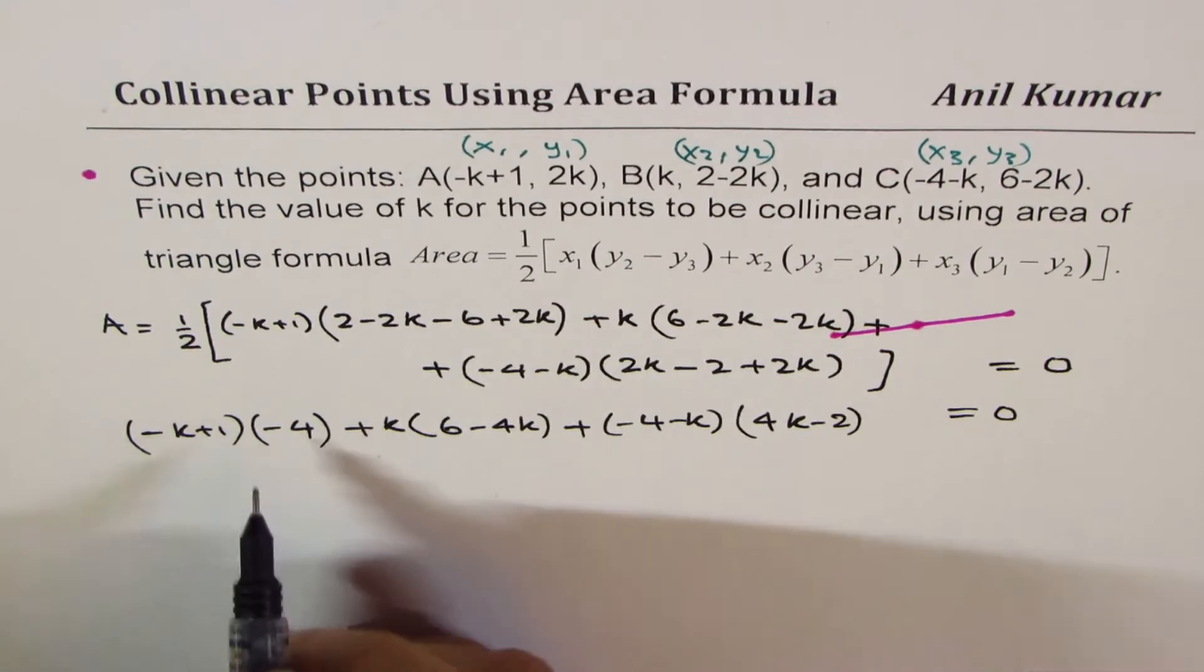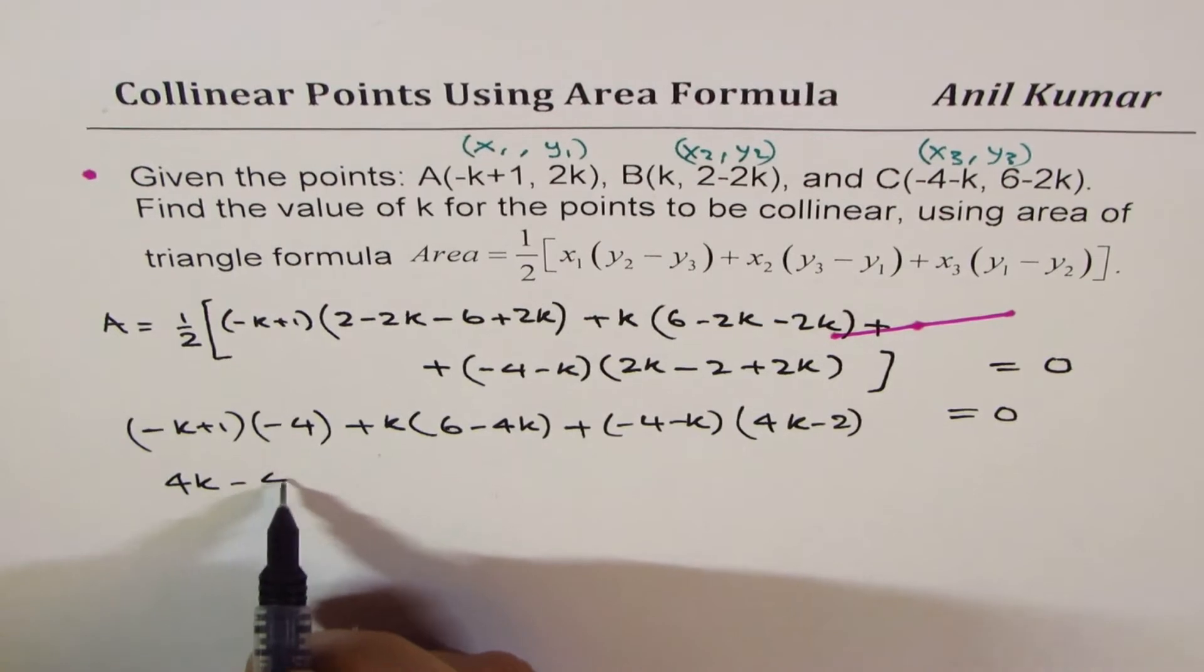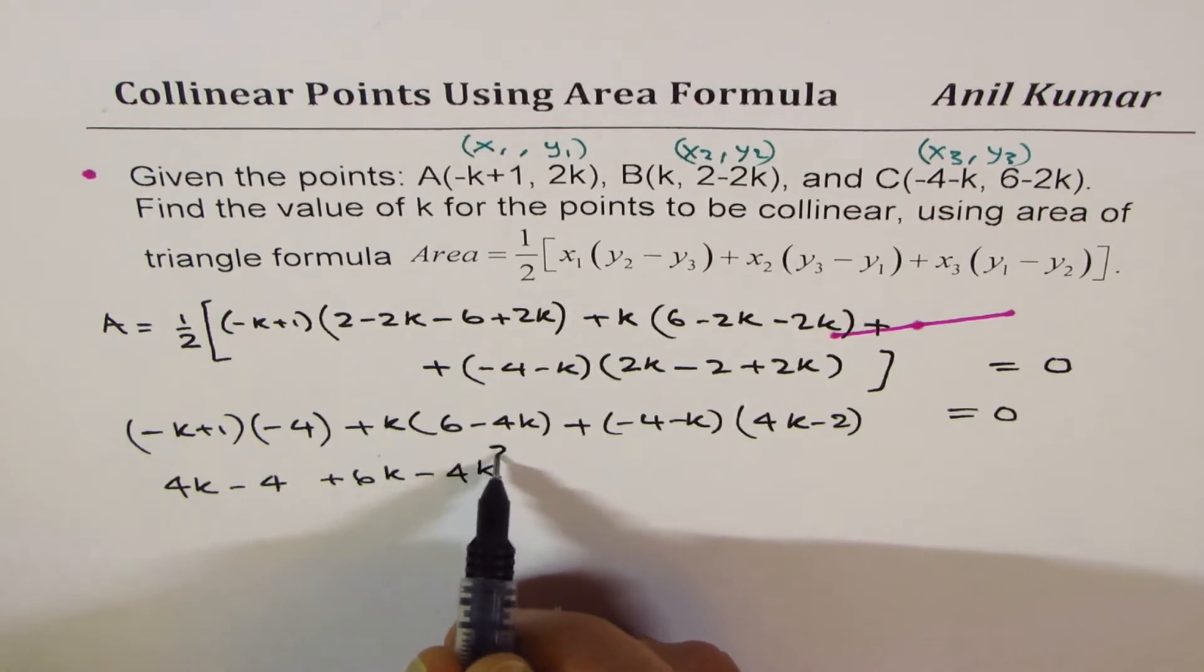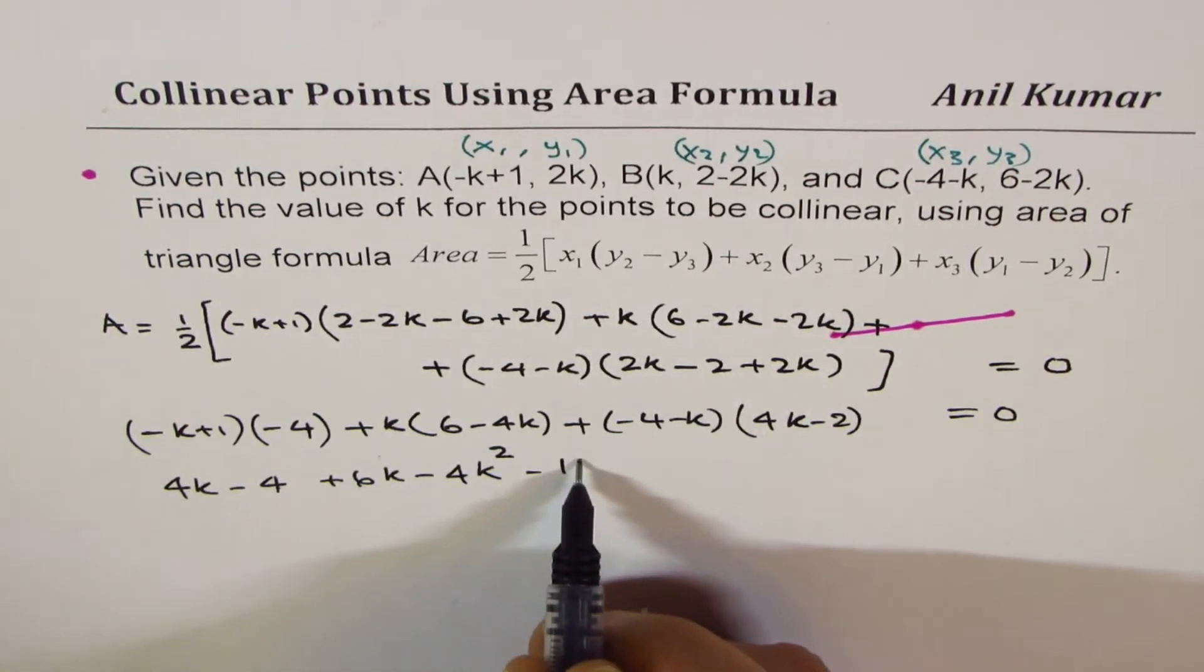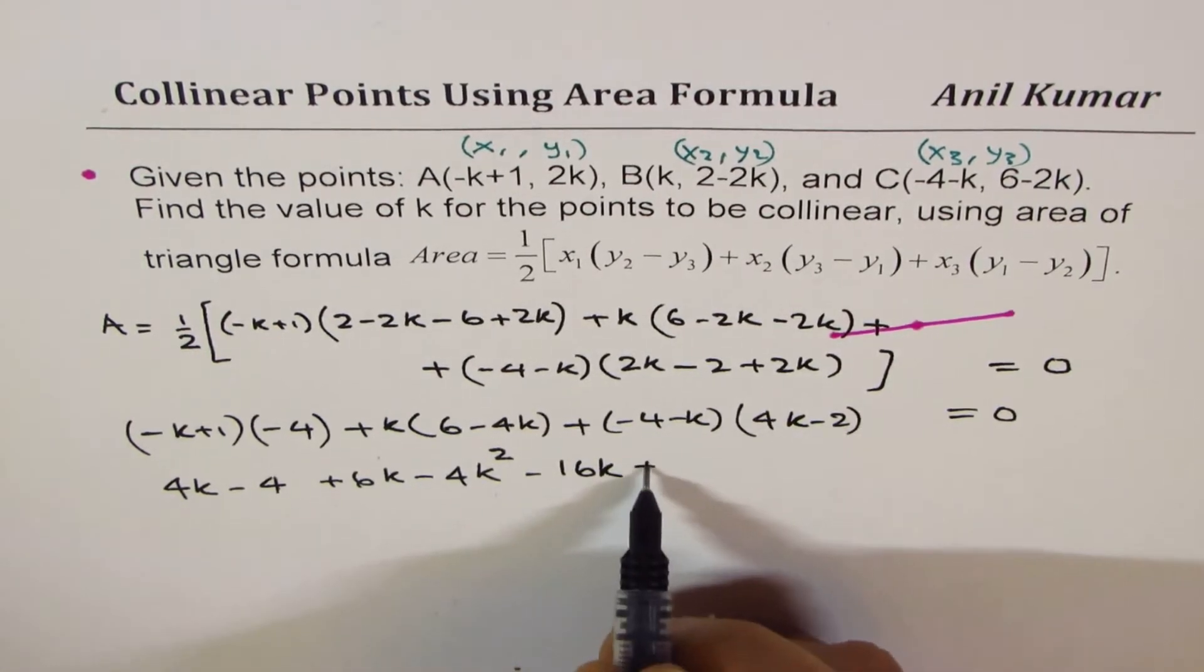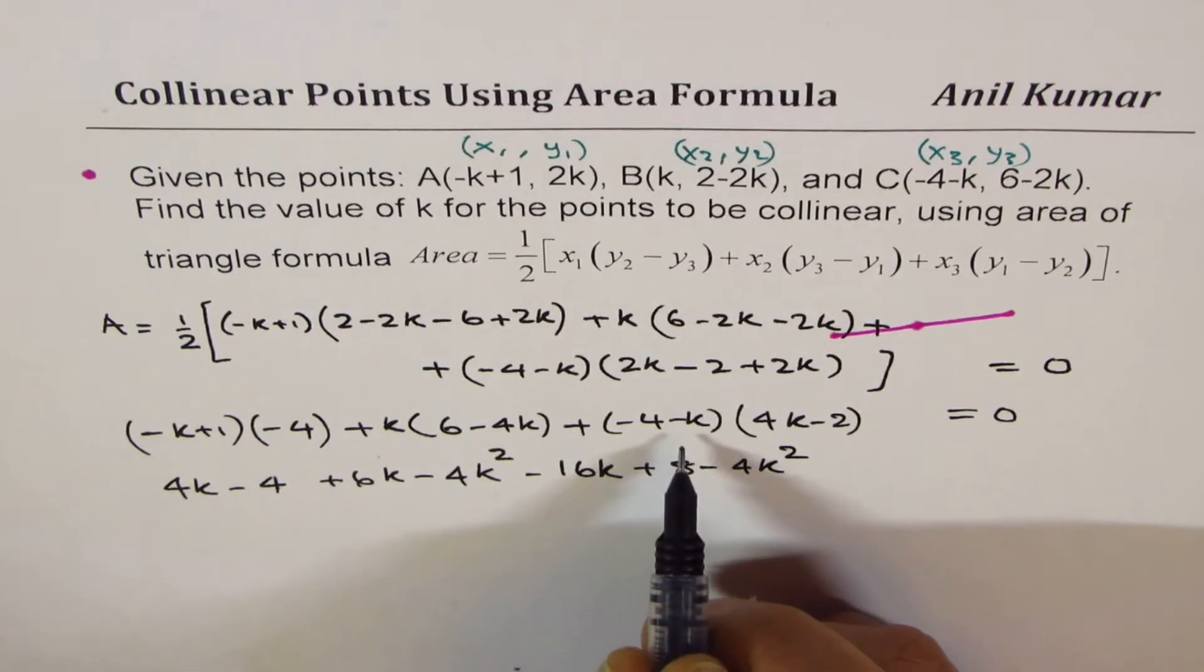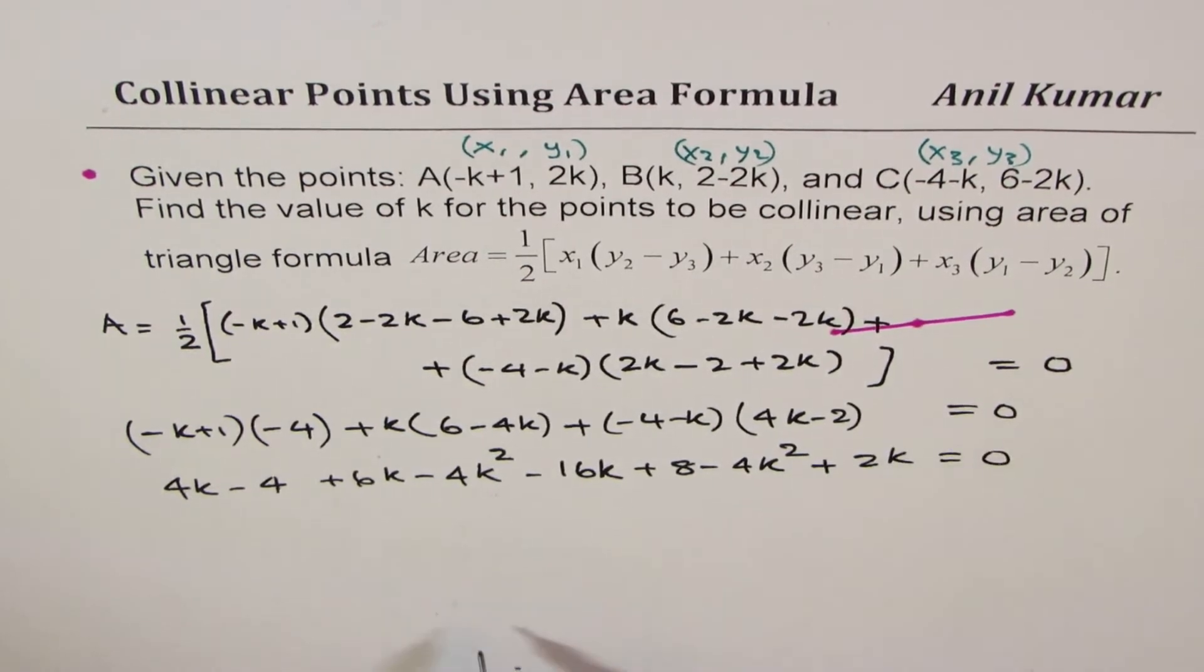Let's open the bracket now. So minus and minus makes it plus 4k-4. Here we get plus 6k-4k², then -4 times 4 is 16k, -4 times -2 gives us plus 8, -k times 4k is -4k², and -k times -2 gives us plus 2k equals to 0.